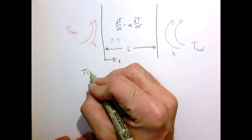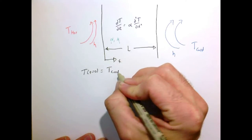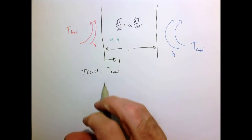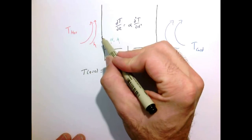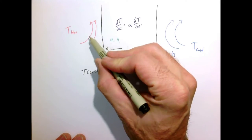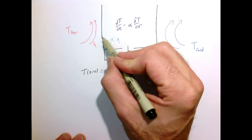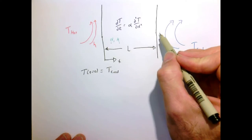For the initial condition, let's assume that initially at time equals zero the temperature is at the cold temperature — we could assume something else, but that's what we'll do here. For the two boundary conditions, I need to equate at each boundary the heat flux from the fluid to the solid by convection, and that has to equal the heat flux by conduction into the solid. That has to be true at both the left and the right.